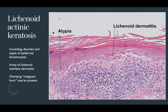Lichenoid actinic keratosis is another variant where you still see crowding, disorder, and atypia of epidermal keratinocytes, but the defining feature is an area of lichenoid interface dermatitis underlying it — a thick band-like lymphocytic inflammation abutting and obscuring the basement membrane, with keratinocyte degeneration and colloid body formation. The differential diagnosis includes a benign lichenoid keratosis, especially if atypical keratinocytes cannot be definitively identified.